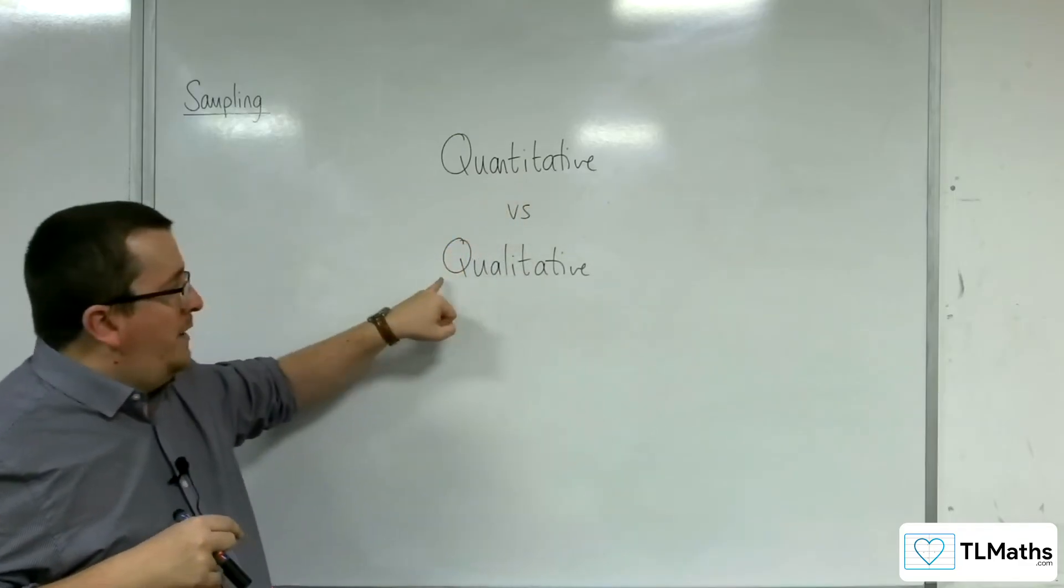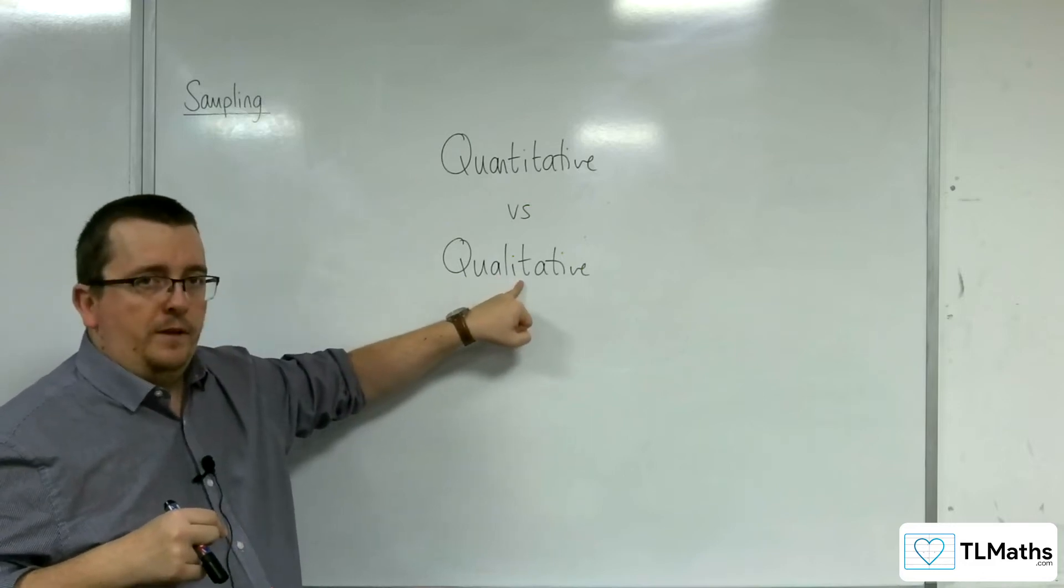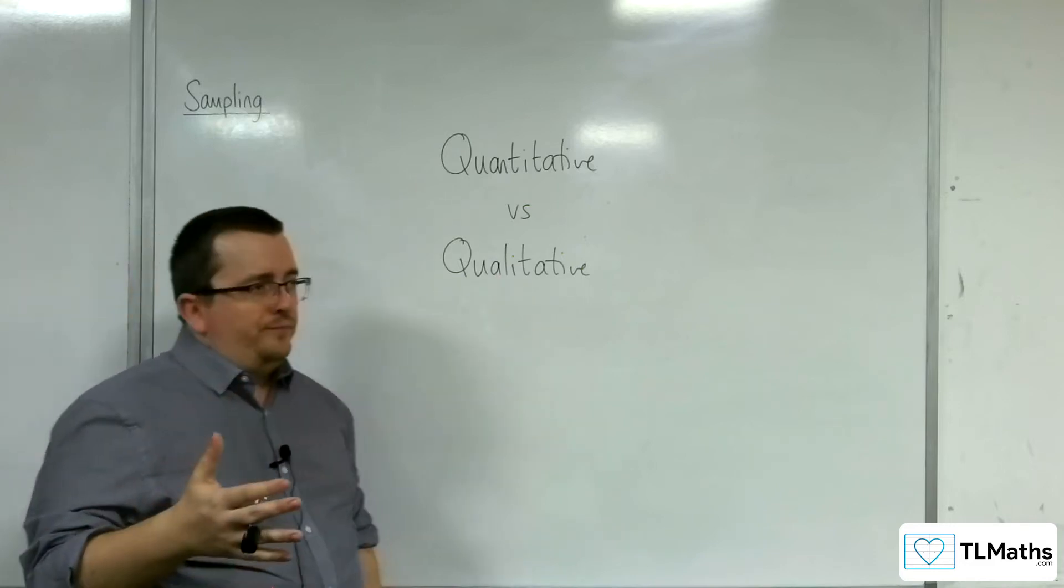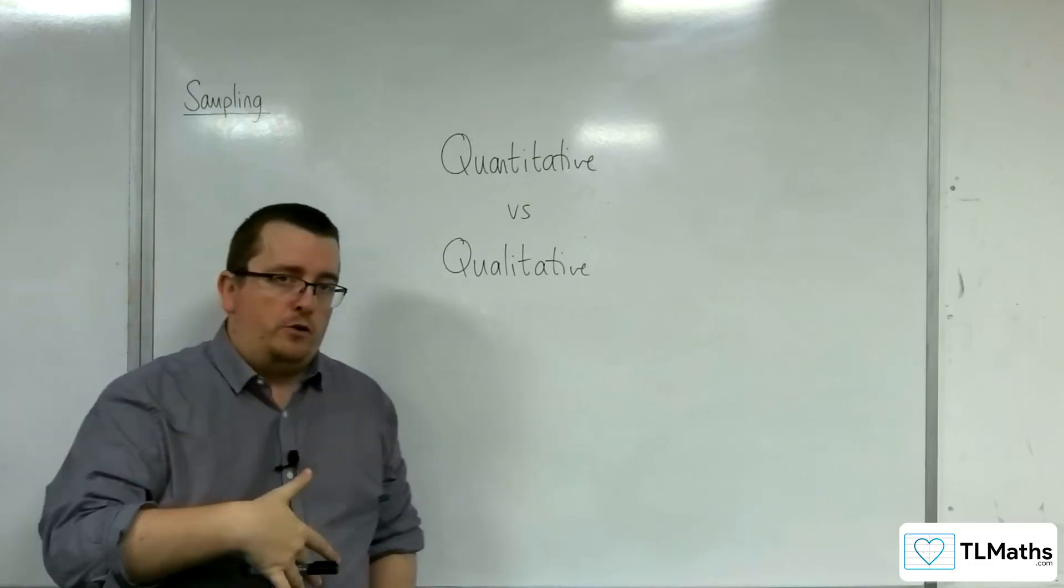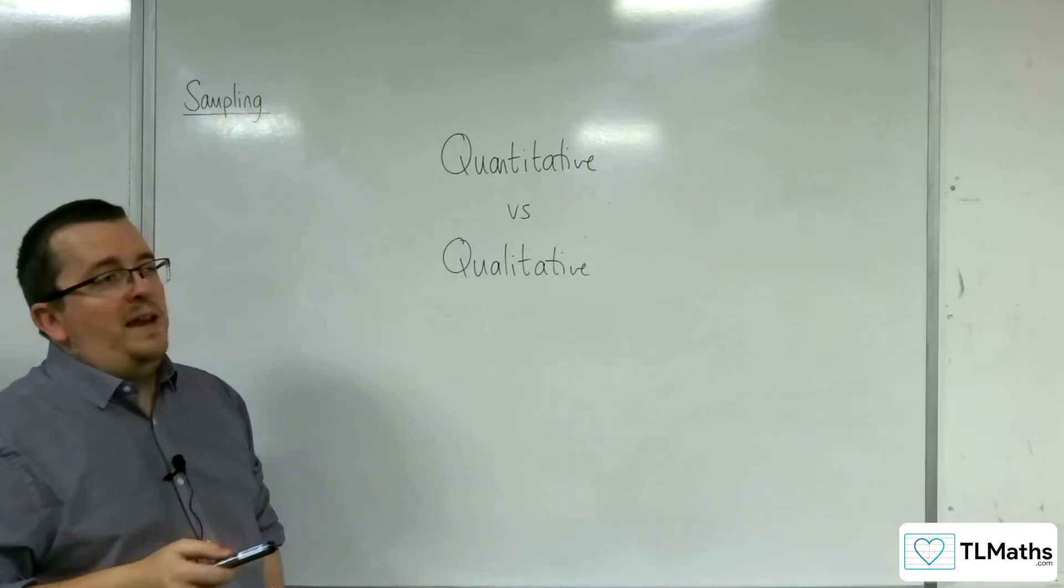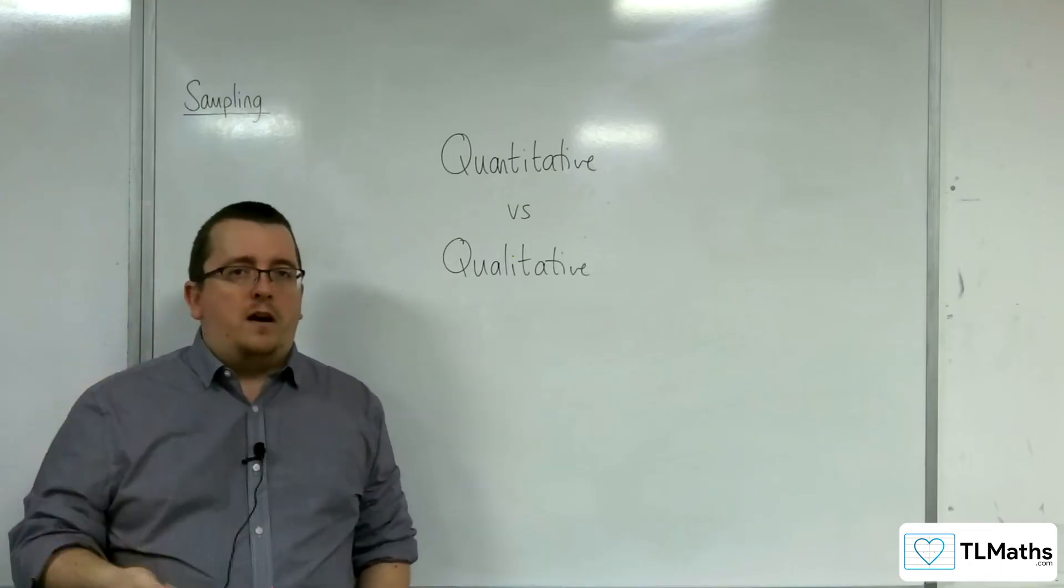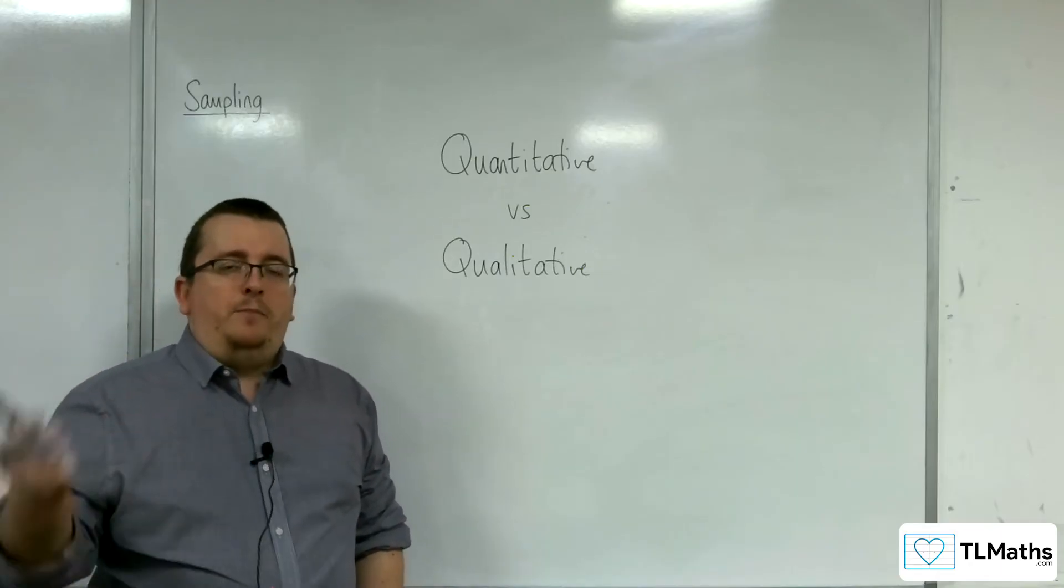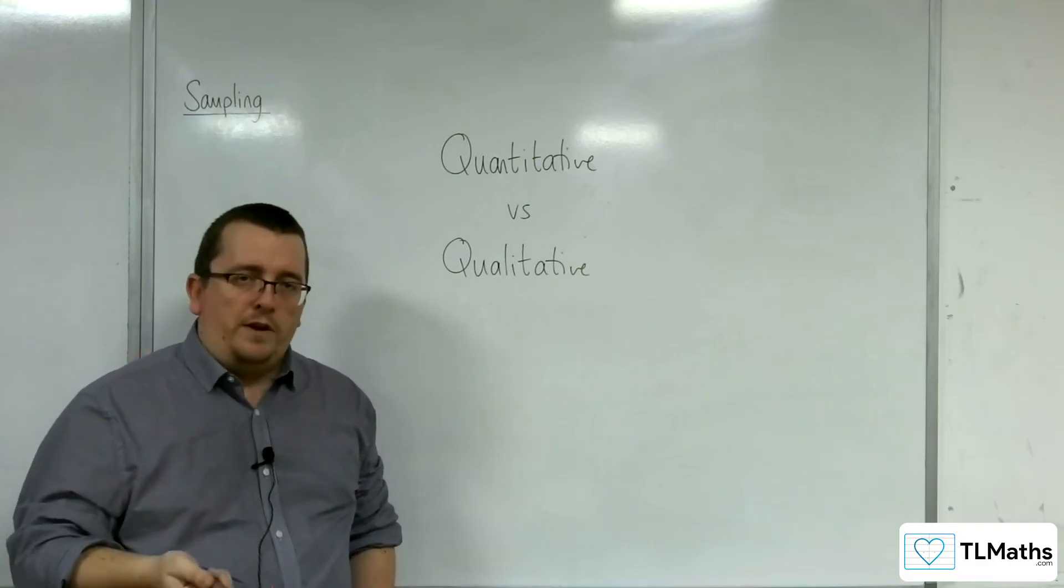Qualitative, we're looking for a quality answer. So, in that, we're looking for a non-numerical value being given back to us. So, that could be like, what's the color of your car? It could be red, blue, green. So, you're expecting back a word.